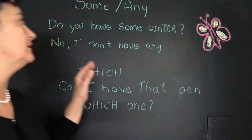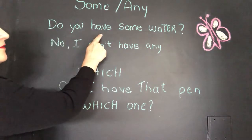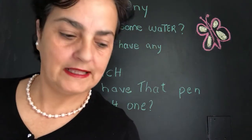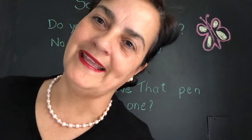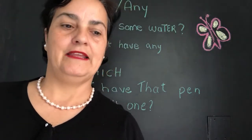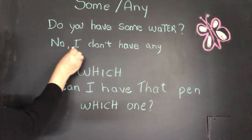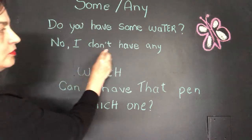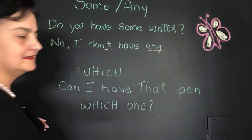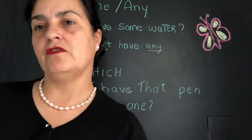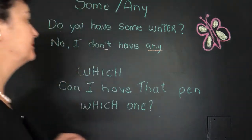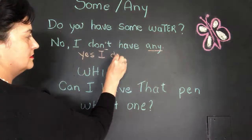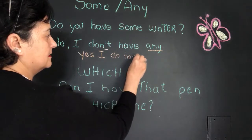Então, aqui eu coloquei um exemplo. Se você fala: 'Do you have some water?' — Você tem água? A gente traduziria: você tem água. Do you have some water? E você pode responder: 'No, I don't have any.' Yes, I do have some. Yes, I do have some.